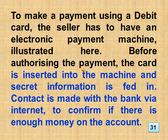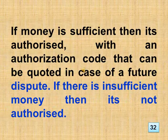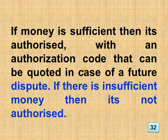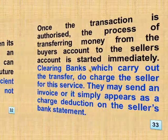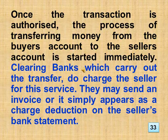Before authorizing the payment, the card is inserted into the machine and secret information is fed in. Contact is made with the bank via internet to confirm if there is enough money on the account. If money is sufficient then it's authorized with an authorization code that can be quoted in case of a future dispute. If there is insufficient money then it's not authorized. Once the transaction is authorized, the process of transferring money from the buyer's account to the seller's account is started immediately. Clearing banks which carry out the transfer do charge the seller for this service. They may send an invoice or it simply appears as a charge deduction on the seller's bank statement.